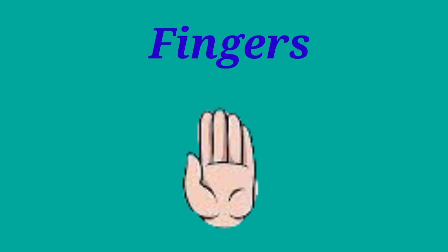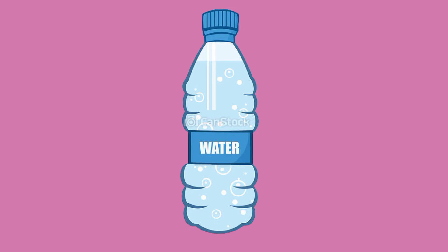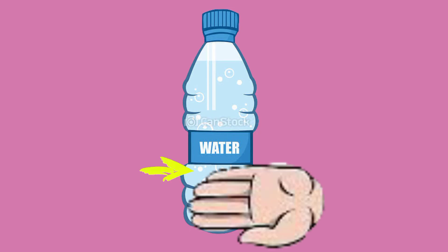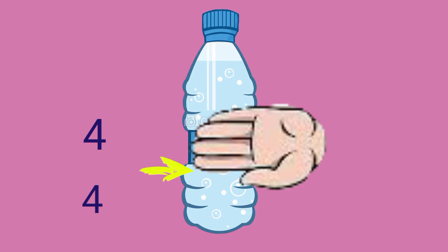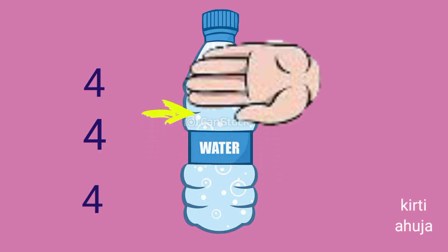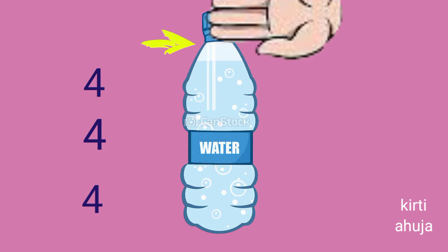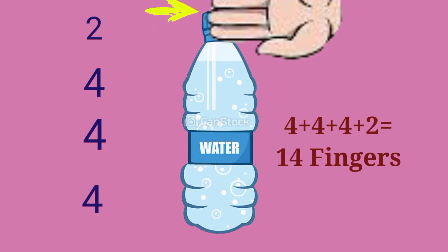Now we will measure using our fingers. Fingers should be close to each other. Let's measure this water bottle: 4 fingers, 4 fingers, 4 fingers, and 2 fingers. So this water bottle is 14 fingers long.